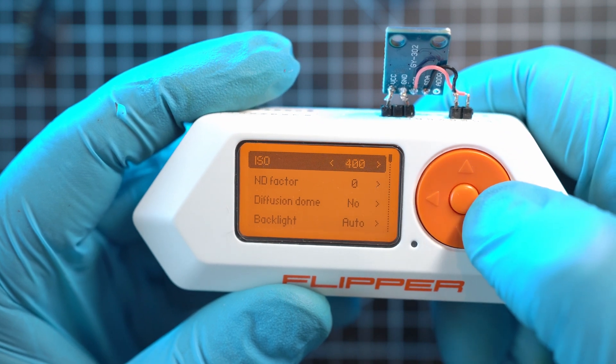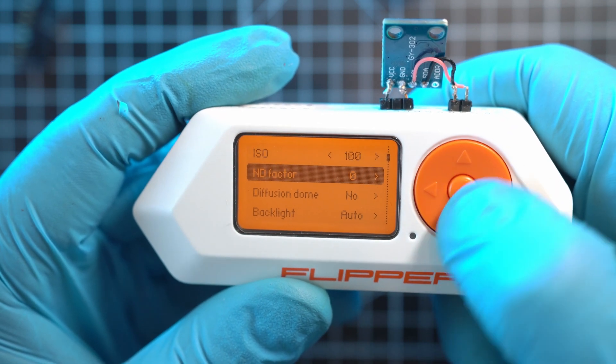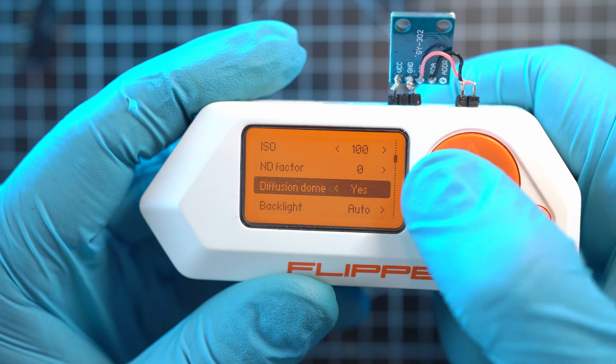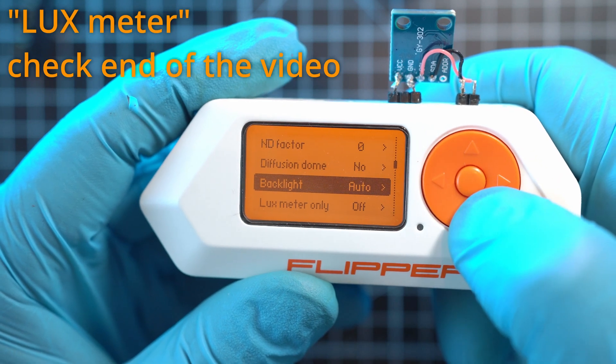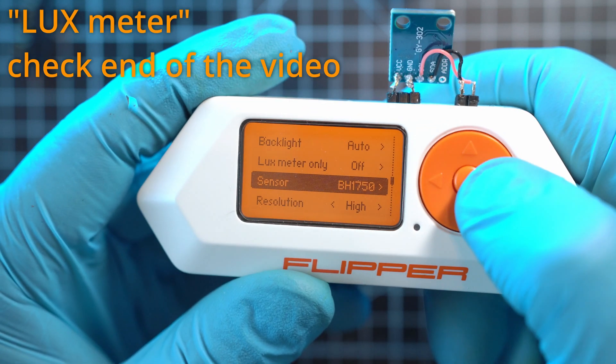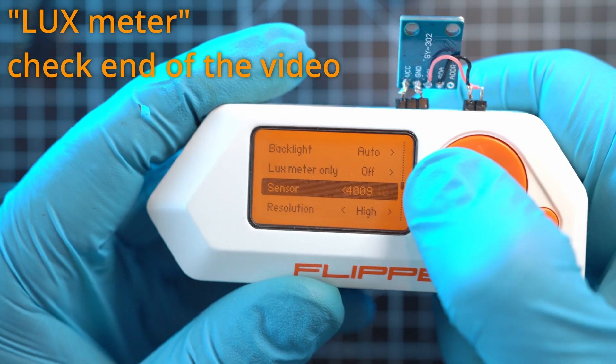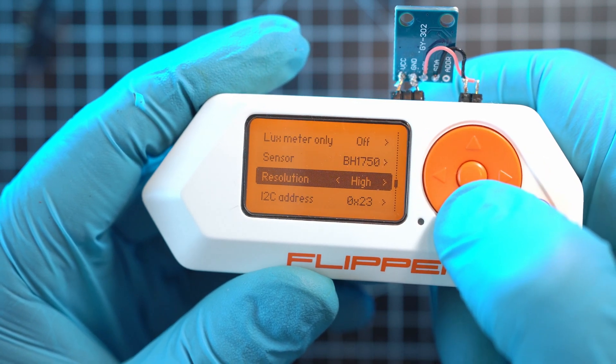Also, ISO can be set, same for ND filter, diffusion, backlight, and much more. App can work with two sensors. But I have BH1750 sensor only.